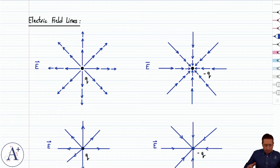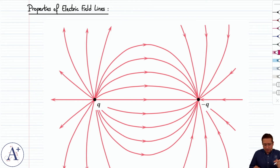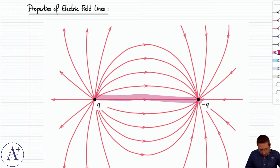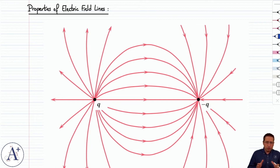Let's now go to the following drawing, which is the representation of an electric dipole. An electric dipole is a positive point charge q and a negative point charge minus q — same charge in magnitude, just opposite in sign — at a fixed distance from each other. Here I've drawn the electric field lines associated with an electric dipole so that we can go over the fundamental properties of electric field lines.